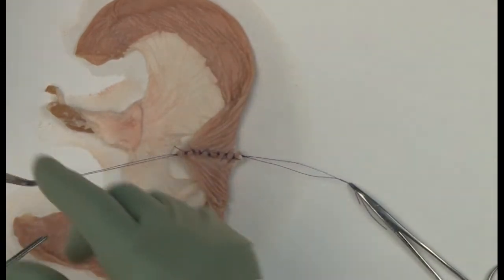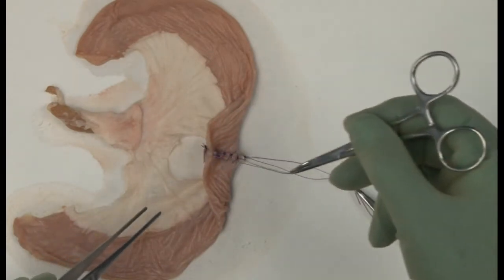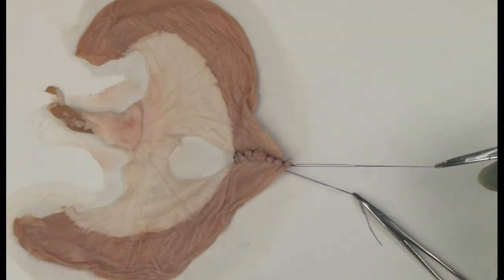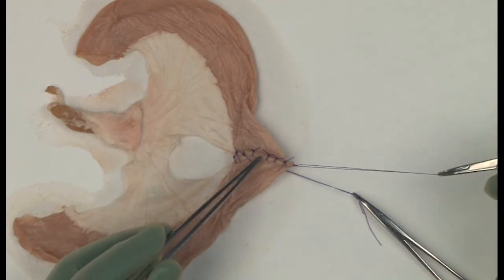Having inserted the whole posterior wall, return the bowel to its normal position, checking there is no gap between sutures. If there are, as here, a further suture can be placed.